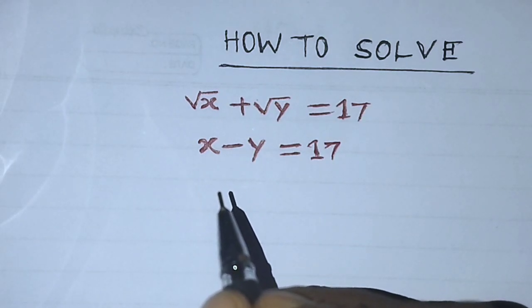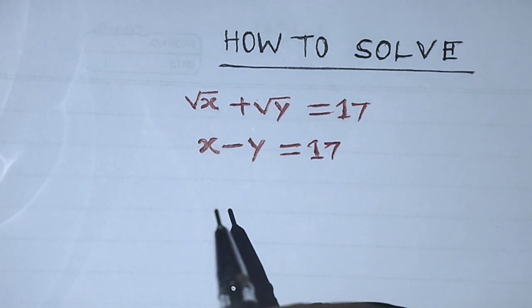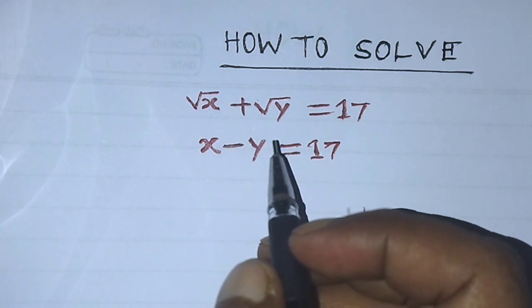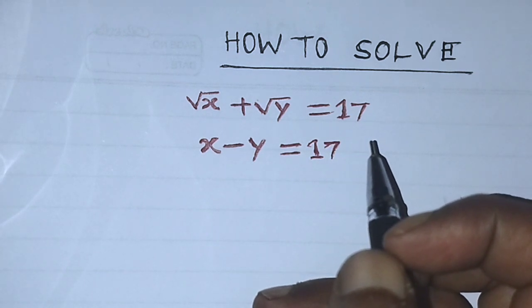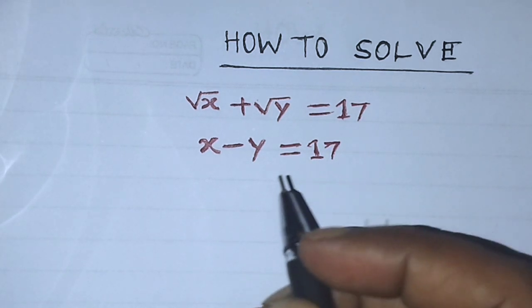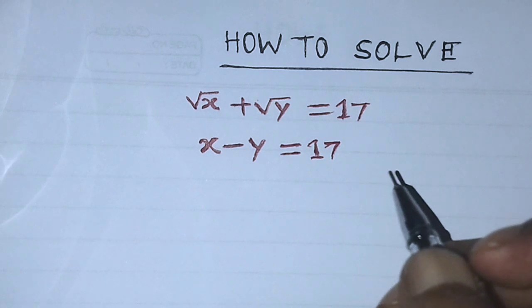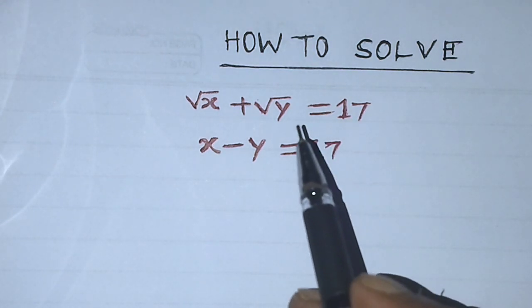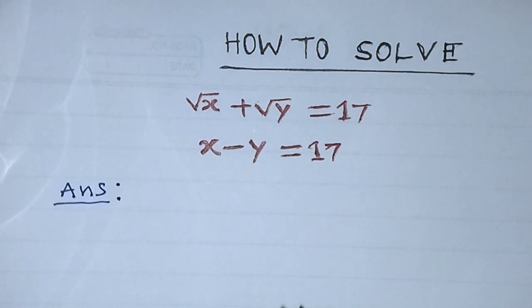Hi guys, welcome back to my channel, Alim Math Vlog. Today our question is: root over of x plus root over of y is equal to 17, and x minus y is equal to 17. In this video, I will tell you how to solve these two equations.